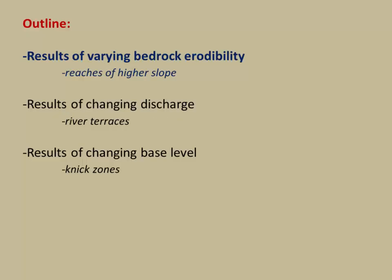In this video, we're going to explore three forcing mechanisms and look at the types of topographic signatures they might produce. First, we'll look at the results of varying bedrock erodibility and how that changes slope. Then we'll look at the results of changing discharge, or the amount of water in the river, and talk about how that can form river terraces. Finally, we'll look at the results of changing base level and how that can yield nick zones.